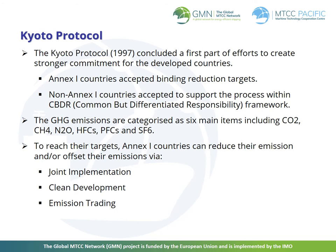The Kyoto Protocol of 1997 concluded a first part of efforts to create stronger commitment for developed countries. Annex 1 countries accepted reduction targets. Non-Annex 1 countries accepted to support the process within CBDR — common but differentiated responsibility. The Kyoto Protocol set binding emission targets for developed countries in Annex 1. The GHG emissions are categorised as six main items: CO2, CH4, N2O, HFCs, PFCs and SF6. To reach their targets, countries can reduce their emissions and/or offset them through joint implementation, clean development, or emission trading.